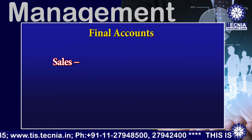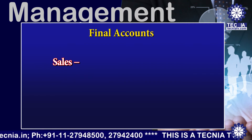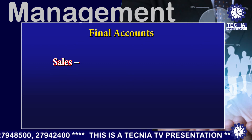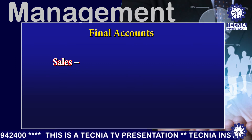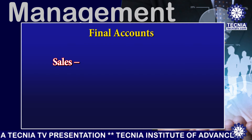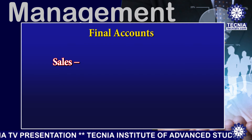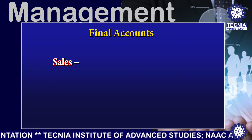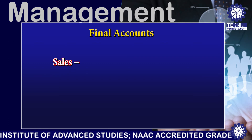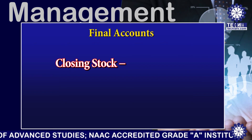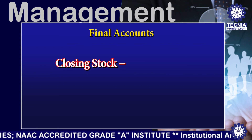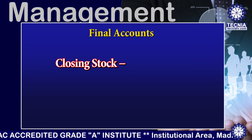Sales is recorded on the credit side of the trading account. The total sale of traded goods, including cash and credit sales, appears in the outer column of the credit side of the trading account. The closing stock — the total value of unsold stock of the current financial year — also appears on the credit side of the trading account.